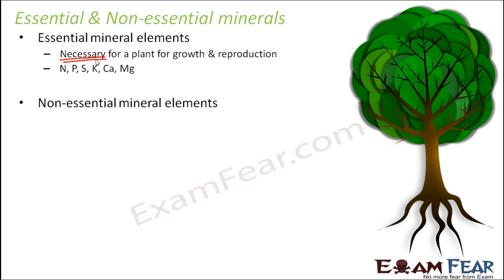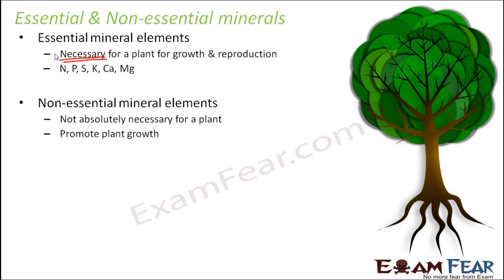The second category is non-essential mineral elements. If these elements are present, it is better, but even without them the plant can do on its own — they are not absolutely necessary. However, they promote plant growth. Notice the difference: for essential elements it is necessary for growth, but for non-essential elements it only promotes growth. Even if non-essential elements are absent, as long as the essential mineral elements are there, the plants will still continue to grow.